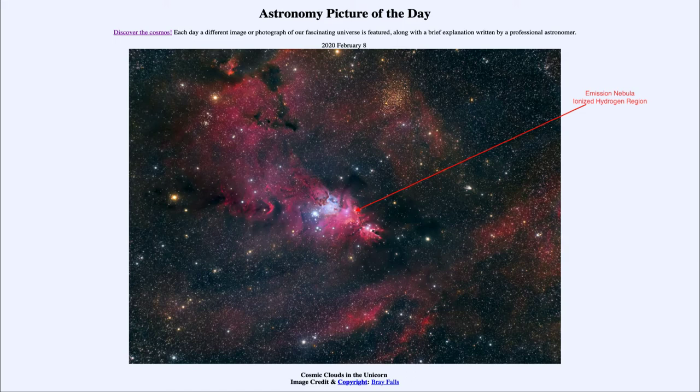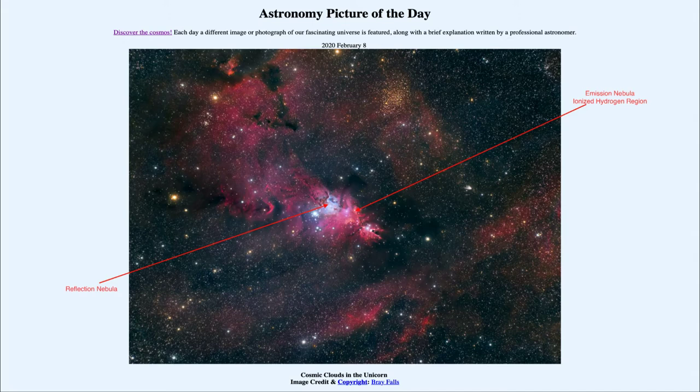Now we also see towards the center a blue reflection nebula, which is caused by a different process. This is caused when the light from a hot star is scattered off of dust grains. Dust grains are very good at scattering blue light, and not so good at scattering red light, and that makes this nebula appear blue.